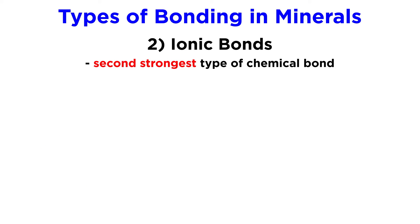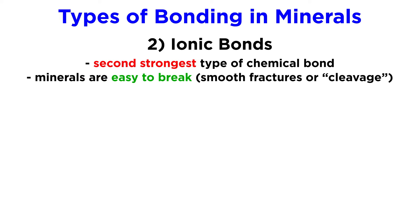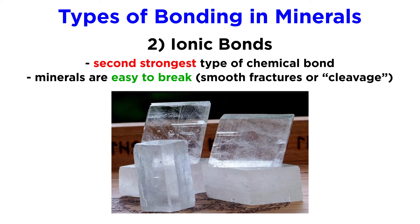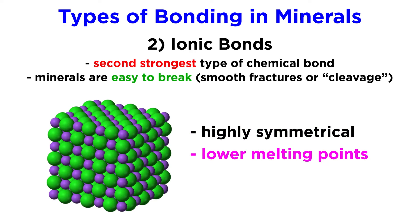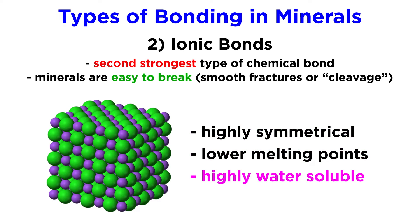For comparison, most rocks begin to melt somewhere between 700 and 1,300 degrees Celsius. Ionic bonds are the second strongest type of chemical bond. Minerals with predominantly ionic bonds tend to be easier to break, and they often fracture smoothly along planar surfaces. Geologists call this quality cleavage, and a mineral is said to have good cleavage if it breaks along a single plane of atoms. Minerals with ionic bonds also tend to be highly symmetrical, have lower melting points, and are highly soluble in water.